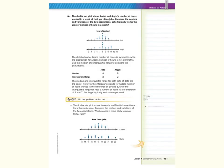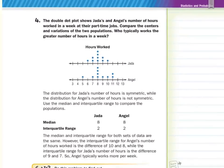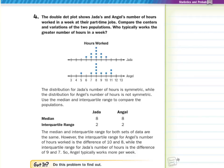Now as we look at guided example four: the double dot plot shows Jada and Angel's number of hours worked in a week at their part-time jobs. Compare the centers and variations of the two populations. Who typically works the greater number of hours? Jada is nice and symmetric, whereas Angel's is not. We use the median and interquartile range. The medians are the same at 8 and the IQRs are both the same at 2. However, Angel's IQR spans 10 minus 8, while Jada's spans 9 minus 7, so Angel typically works more hours per week.